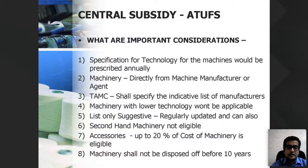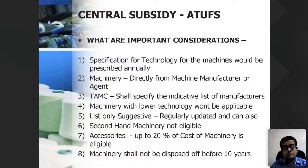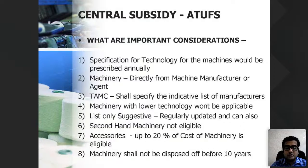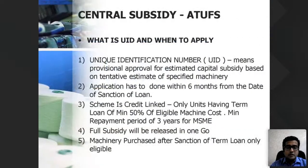Machinery shall not be disposed of before 10 years. You cannot sell the machine — this is to avoid scams where people take the subsidy and then sell the machinery, defeating the government's intention of generating employment and promoting industrialization. The machinery or unit should run for at least 10 years.